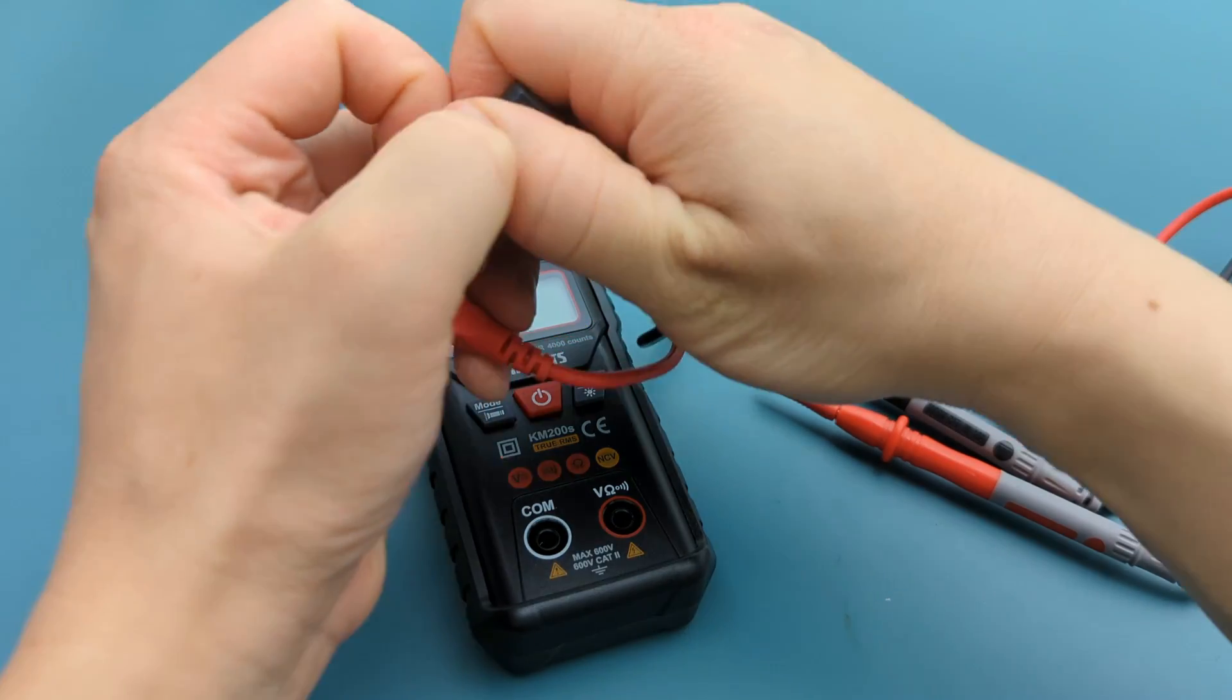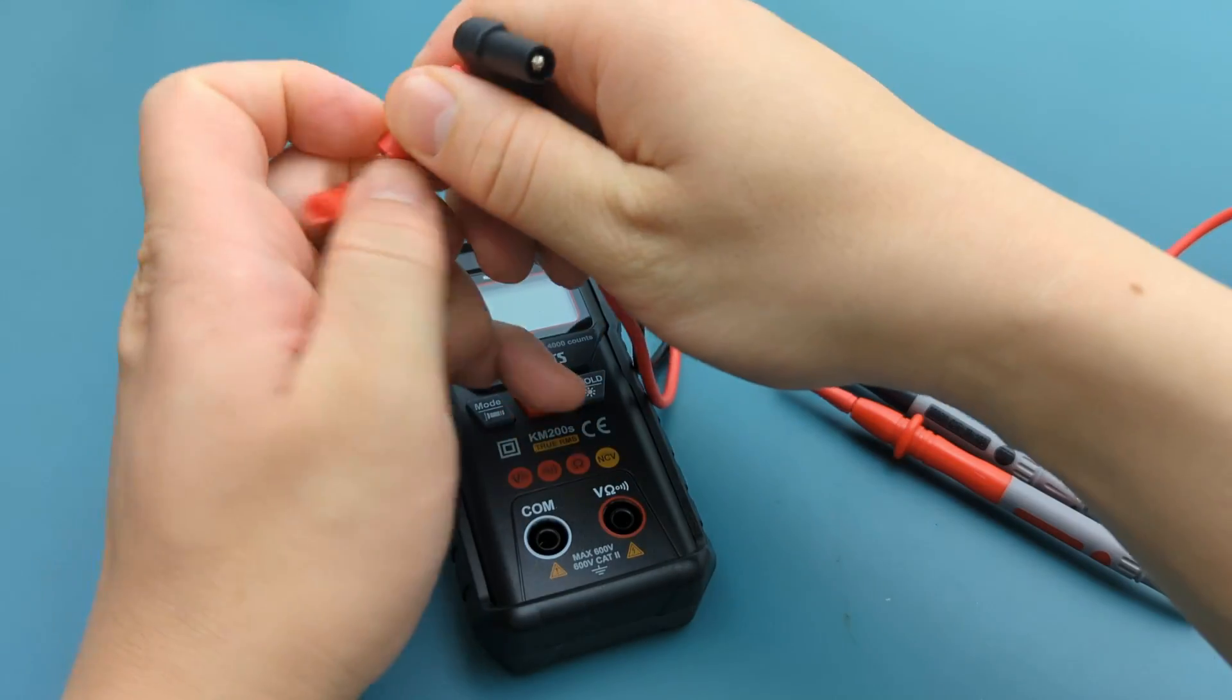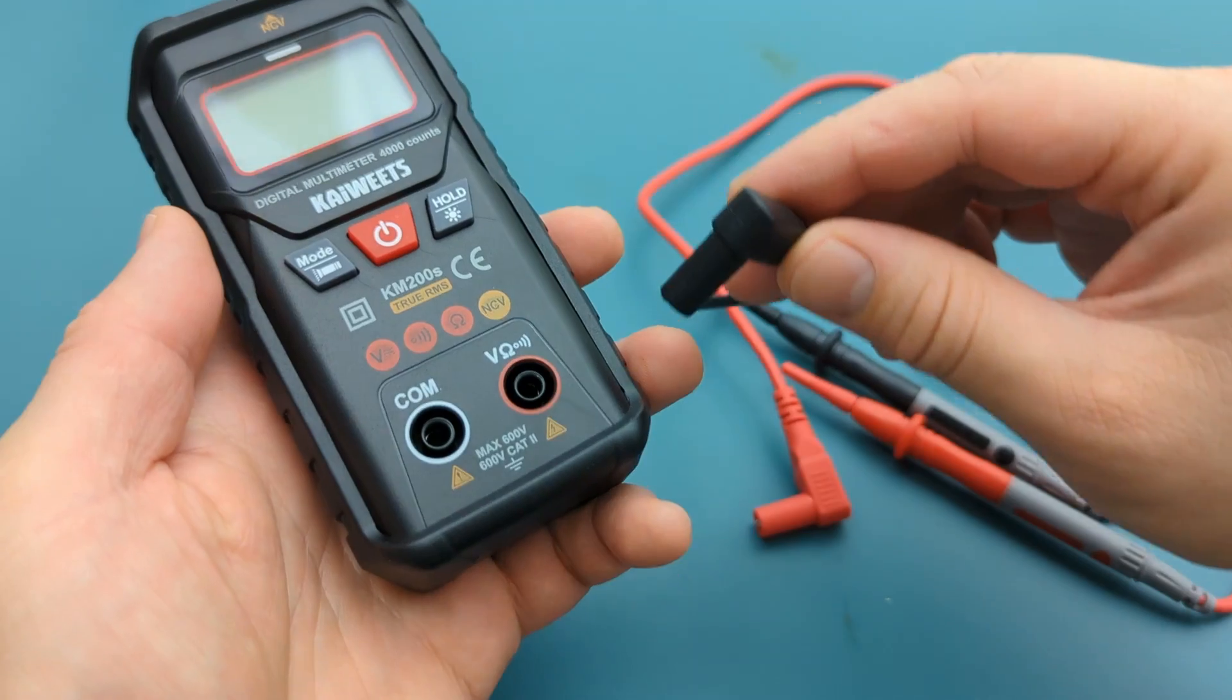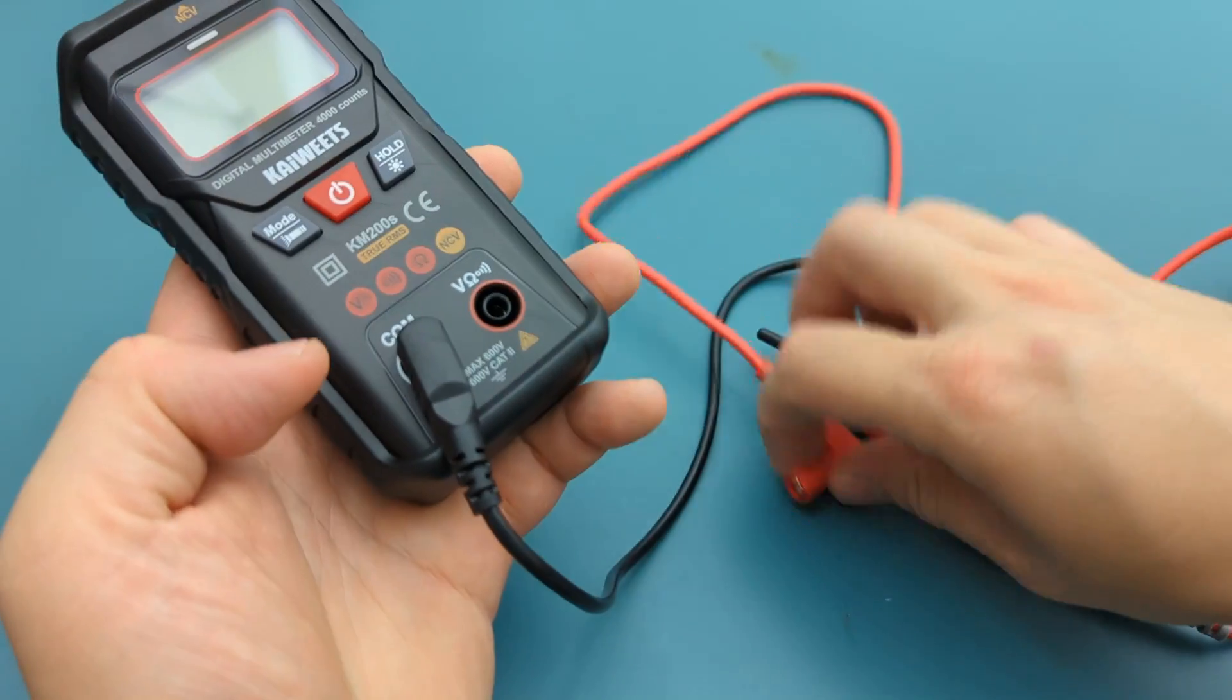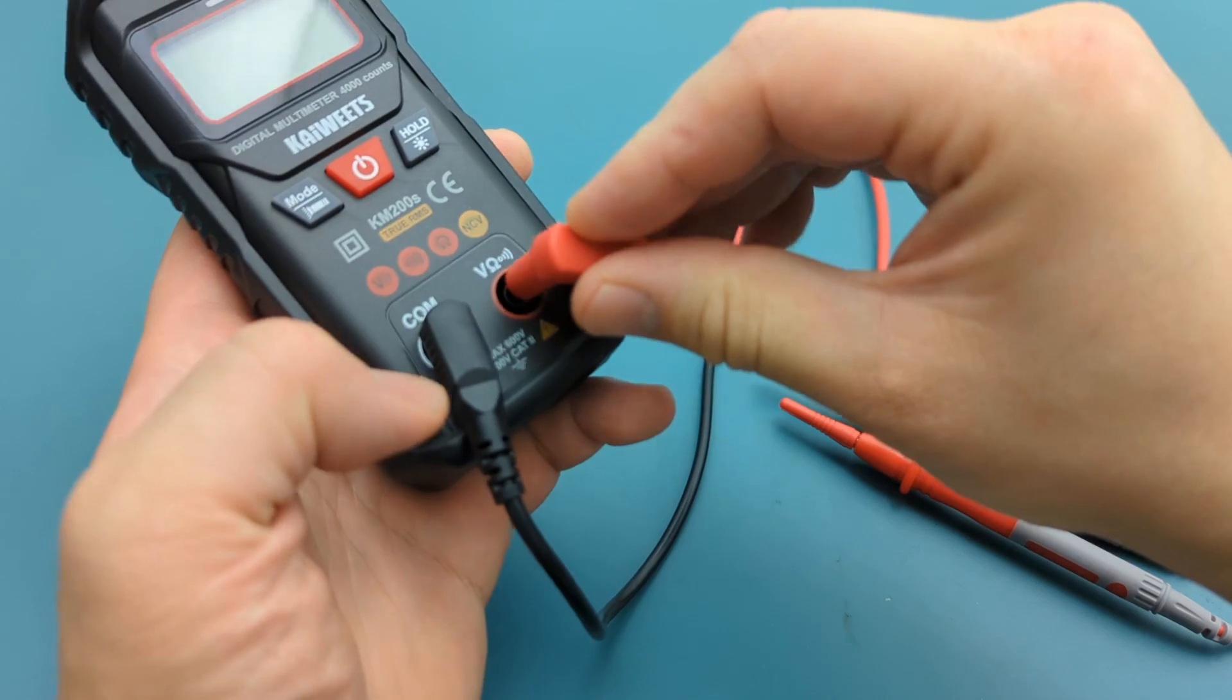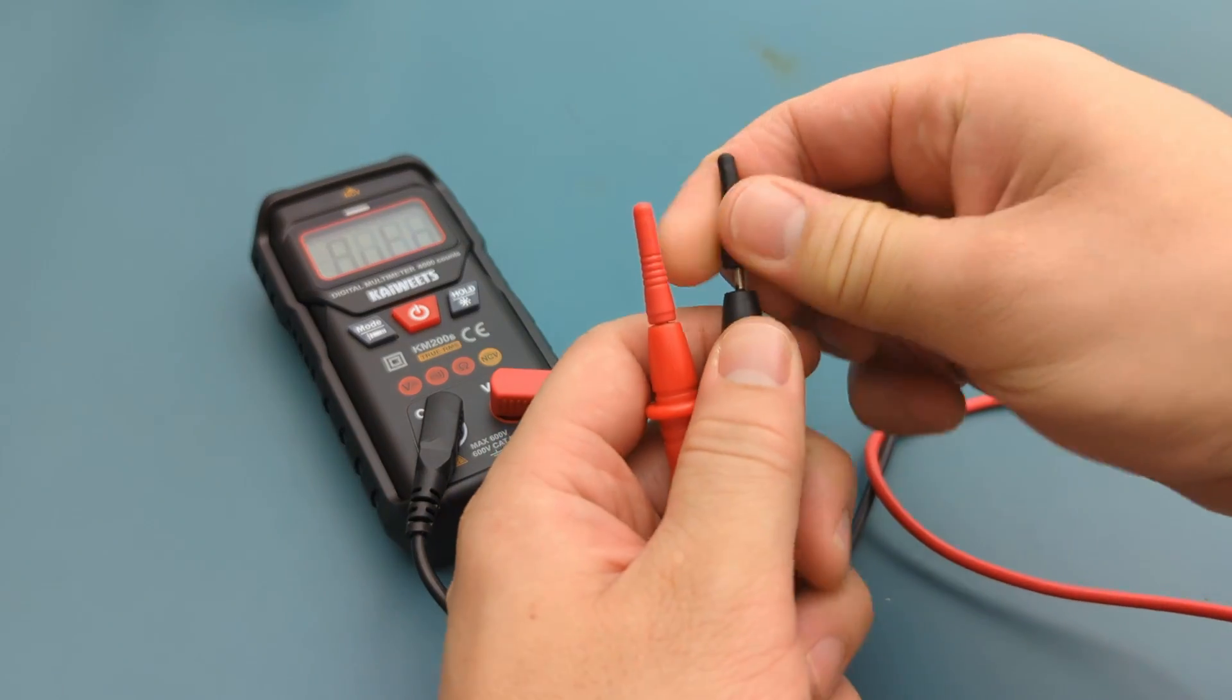Remove the protective caps from the meter probe ends. Insert the black probe into the COM port. Insert the red probe to the input port. Remove the protective caps from the meter probe leads.